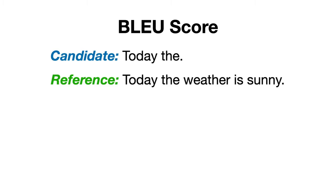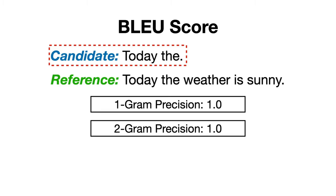What if our model generated only the words 'today the'? We get a precision of 1 for both unigrams and bigrams, so a perfect BLEU score, which I believe we could both agree that this is not okay. So, what can we do about this?